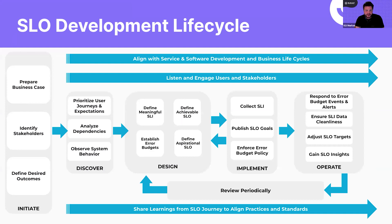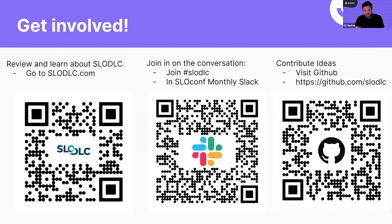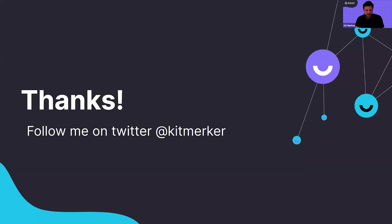That's the SLO DLC in a nutshell. I went through this rather briefly, but hopefully you have something to get you started. Go to slowdlc.com to check out the handbook and other materials. Make sure you join the Slack space — it's in the SLOconf monthly Slack and the channel is called SLO-DLC. We're also on GitHub and accept pull requests and issues. We'd love your feedback and to talk to you about getting involved. Thank you so much, and I hope you enjoy SLOconf.